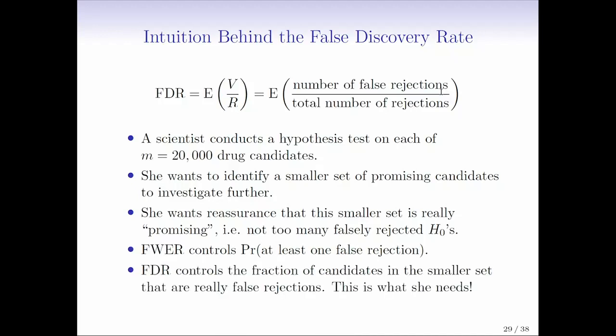In this setting, family-wise error rate really isn't the right thing because family-wise error rate would help the scientists be sure that no drug targets are false positives. But some false positives are okay. You just don't want to have too many. And the reality is that if you tried to control a family-wise error rate in that setting, you'd probably just end up finding nothing. That's right. Because 20,000 is a really big number.